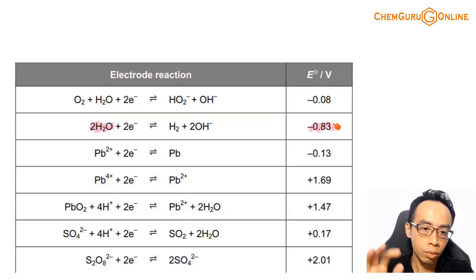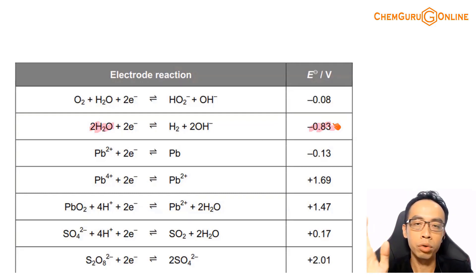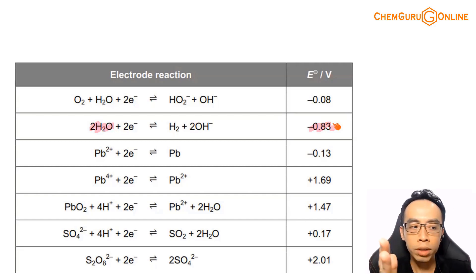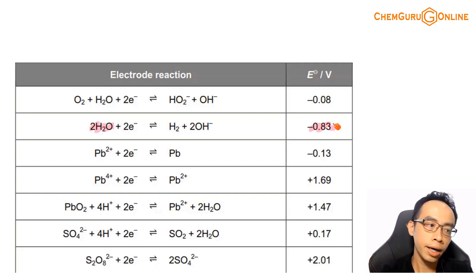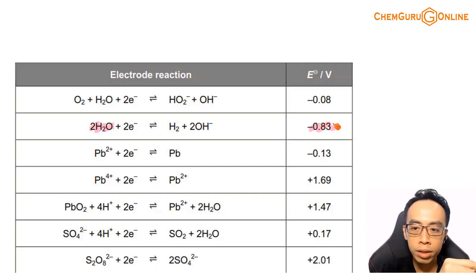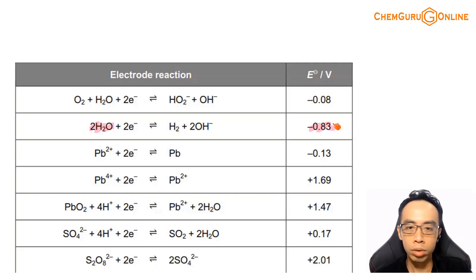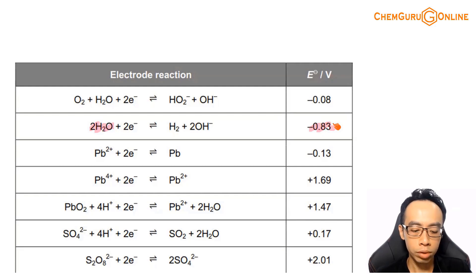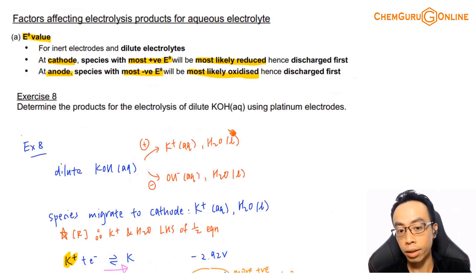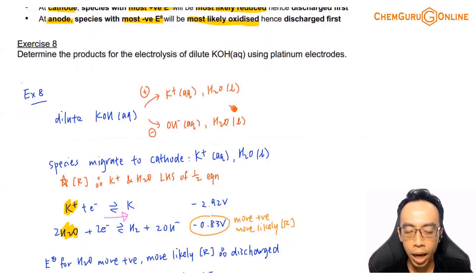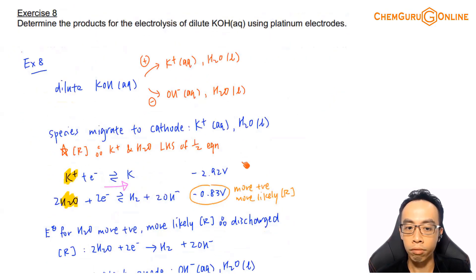The process is: decide which side of the half equation you want to find, open the data booklet, find that species, copy the whole equation and E value down. Don't flip the equation, don't change the sign, then exit the data booklet. Done this way, it is the most efficient, fastest, and least confusing approach.